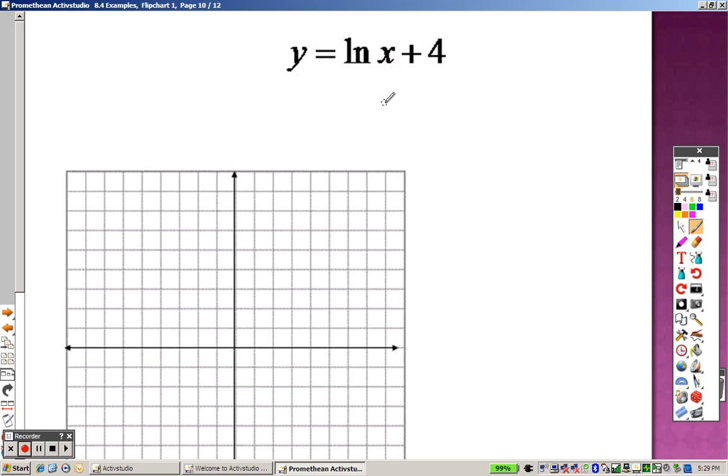So this next one, natural log. To graph natural log, it's actually pretty simple. You go to y equals, and natural log is the button right beside the 4. So clear everything out, and you would just do natural log x in parentheses. So it would be ln parentheses x, and then plus 4.